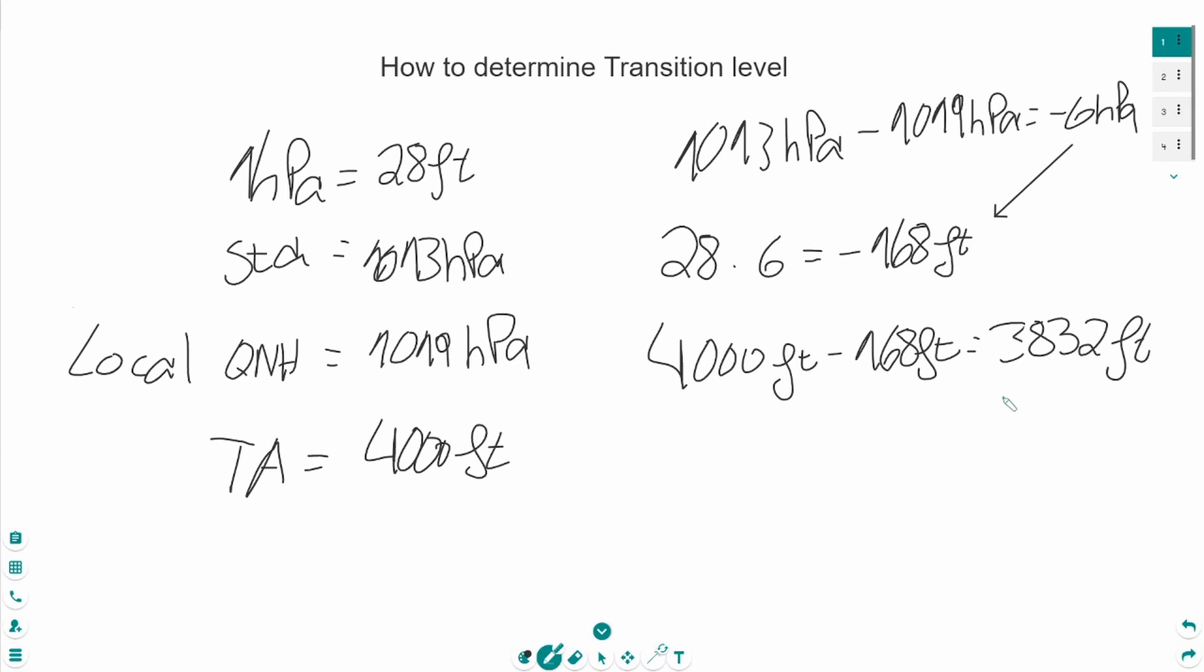And this is our transition flight level. But transition levels, abbreviated as TRL. That means we have flight level 3,800. But flight levels only can end with a 0 or a 5. So, let's round it up and we have then flight level 40.